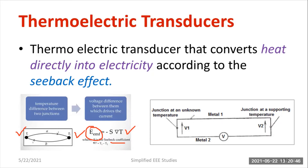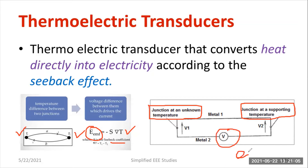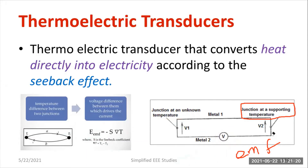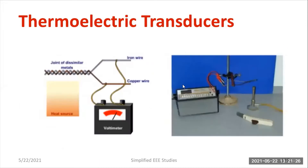How are you going to measure the temperature? There is one unknown temperature to be measured, and another junction temperature is taken as a reference. So one is unknown and the other acts as a reference. You compute the difference in temperature, and that difference is directly proportional to EMF. The temperature difference is directly proportional to EMF — that is the speciality of the thermoelectric transducer.